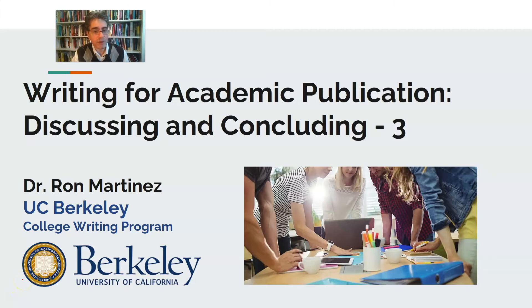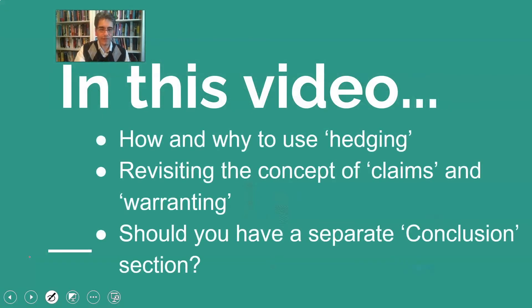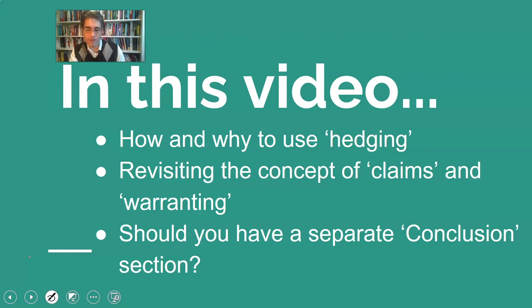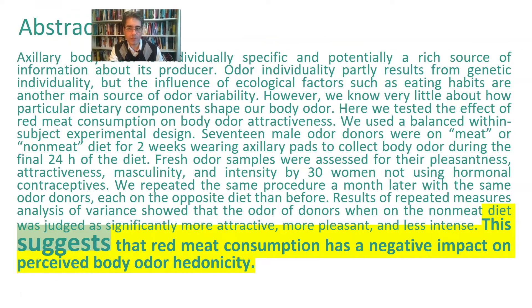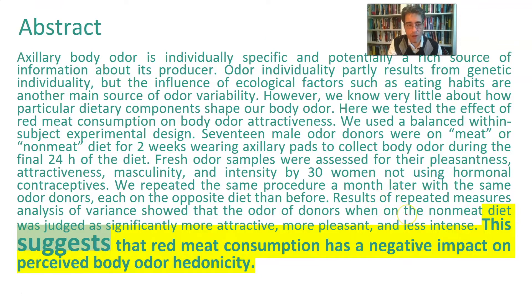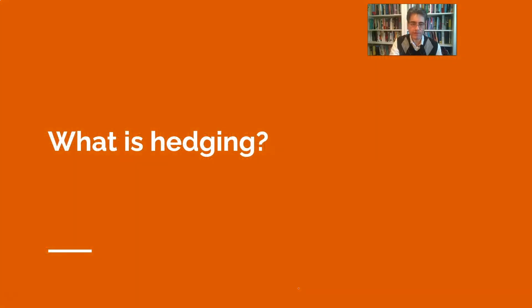For the final video of this module, we're going to pick up where we left off when we introduced the concept of hedges and look more deeply into that — also how it ties into the concept of claims and warranting, which we began talking about in the last video, and whether or not you should have a separate conclusion section in your article. If you remember, in the first video this came up: in the abstract of that meat study, the authors use the word 'suggests' — not a strong word like 'prove.'